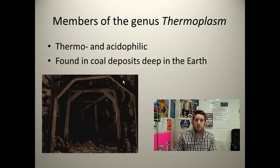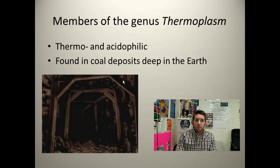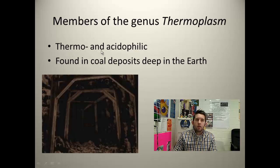Finally, we have members of the genus Thermoplasma. That is their genus name, which is why it's italicized. These organisms are thermophilic and acidophilic — they like acid, acidic conditions, and they like heat. These are conditions you might find in places such as deep coal deposits in the earth — very harsh conditions, very deep underground. But we still find these organisms thriving there because they don't have much competition and do very well for themselves.